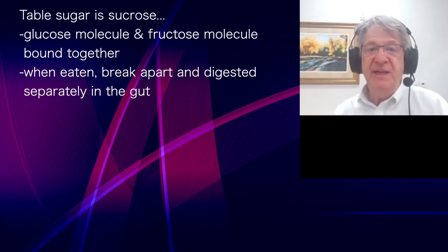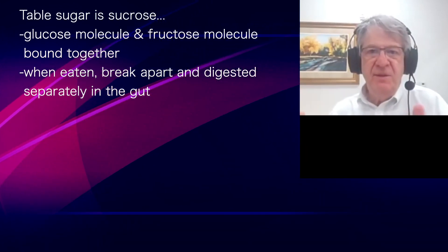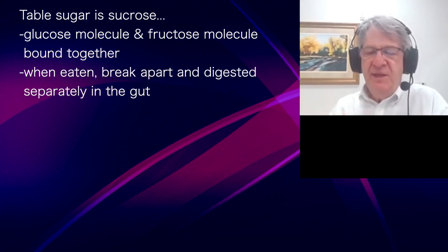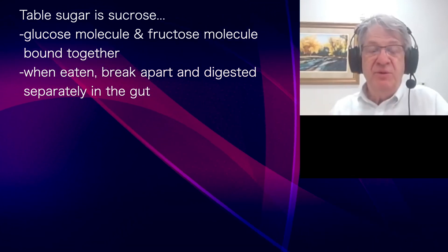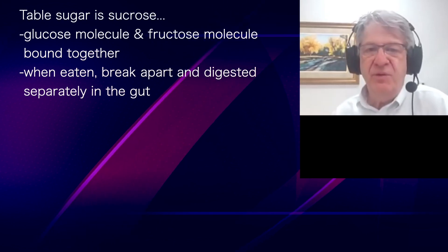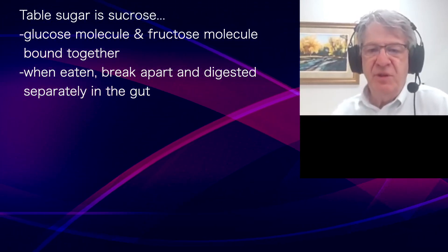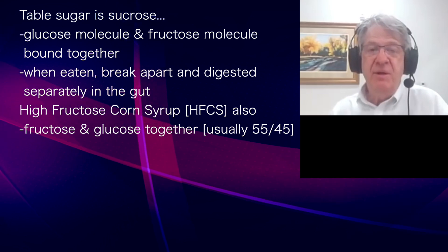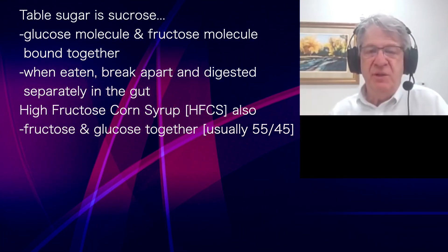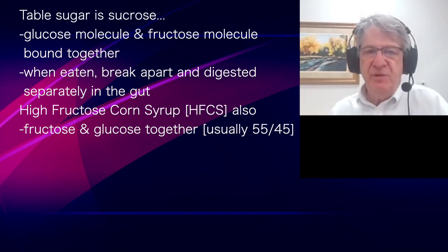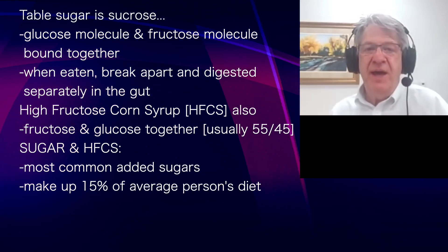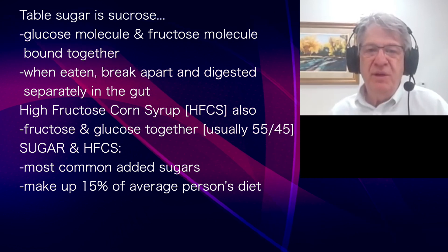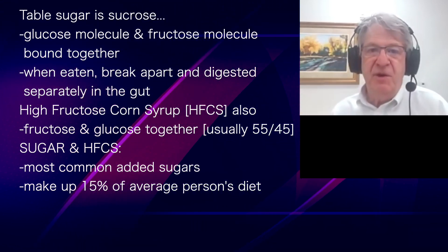Sucrose is a disaccharide that consists of a glucose molecule and a fructose molecule bound together. When you ingest sucrose, they get broken apart and you absorb them separately in the gut. High fructose corn syrup also consists of glucose and fructose mixed together, typically about 55% fructose and 45% glucose. These are the two major added sugars in the diet and can make up 15% of the overall caloric intake in the average person's diet.